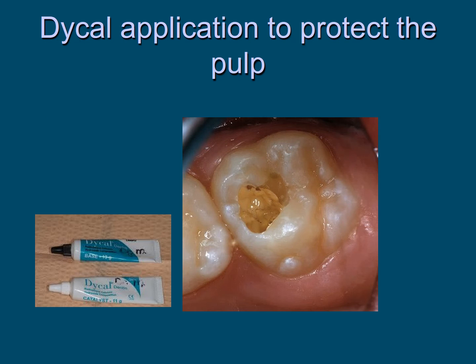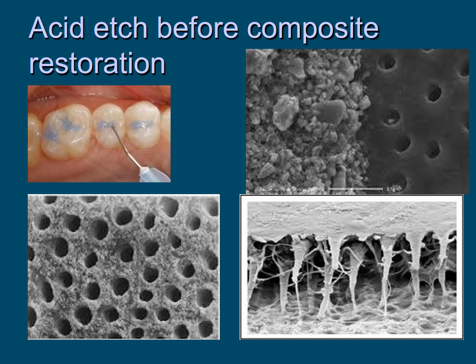On the other hand, some materials have a positive effect on the pulp. For example, calcium hydroxide, also known as Dycal, induces secondary dentine formation by the pulp, which is a good example of biocompatibility. Also, acid etching involves the etching of the dental enamel by applying an acid to roughen the surface to increase the retention of the composite restoration. The adhesive will penetrate the dentinal tubules and block the gap between the new restoration and the tooth surface, which will eventually prevent micro-leakage.